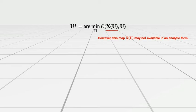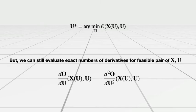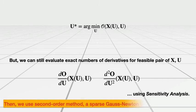However, the map X of U may not be available in an analytic form. Although the map X of U does not have analytic form, we can still evaluate the exact gradient and Hessian of the objective function for feasible pairs of X and U using sensitivity analysis. Finally, we use second-order gradient-based methods such as sparse Gauss-Newton for finding optimal U.